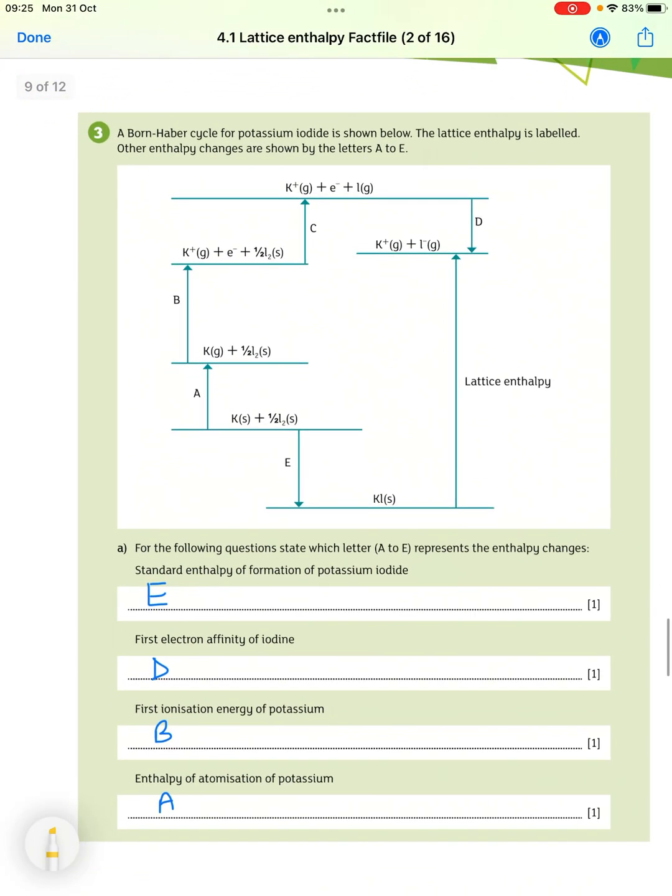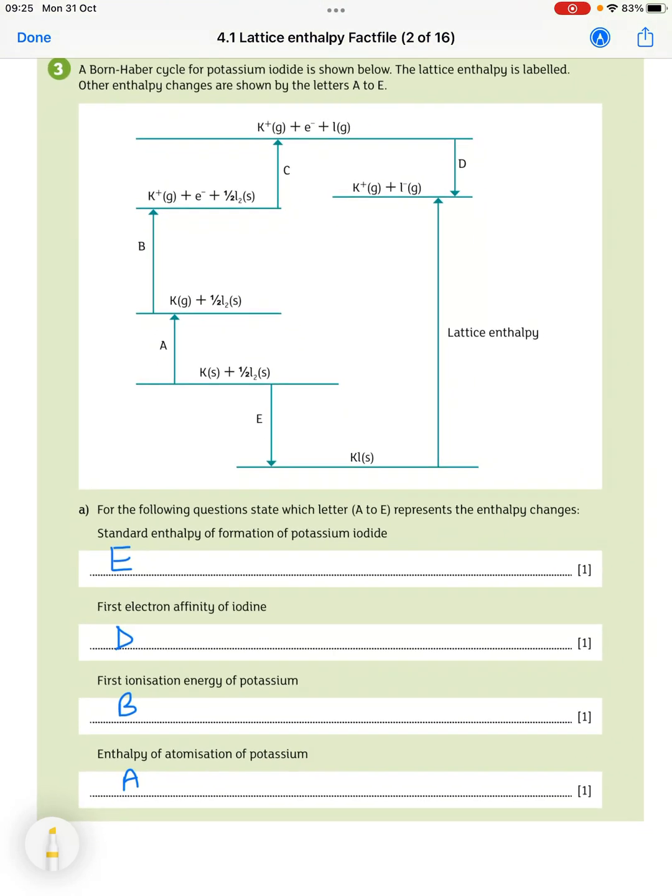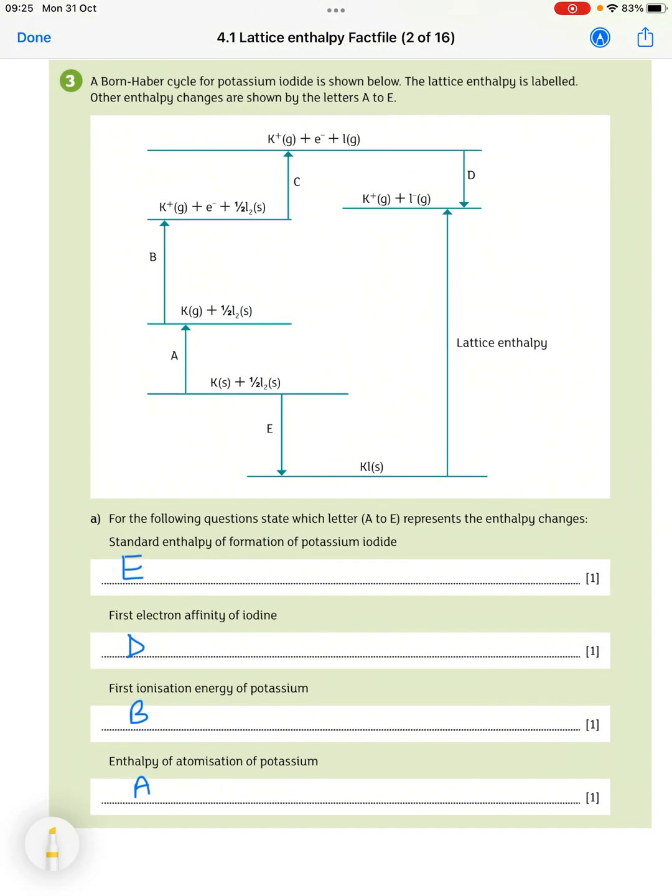Next, we have a Born-Haber cycle for potassium iodide. A lot of enthalpy is labelled. Other enthalpy changes are shown by the letters A to E. For the following questions, state which letter A to E represents the enthalpy changes.